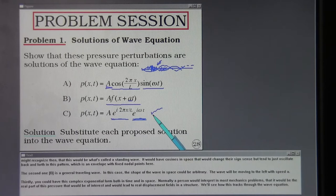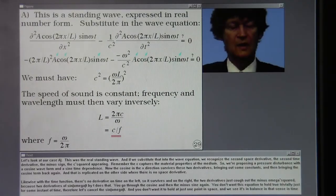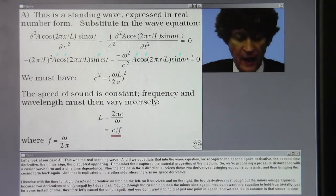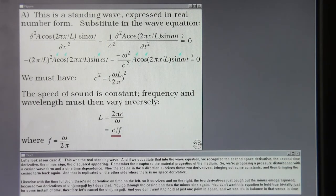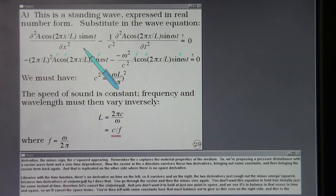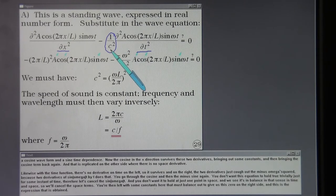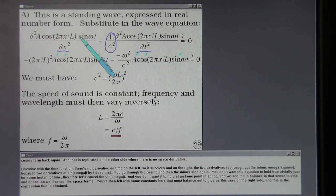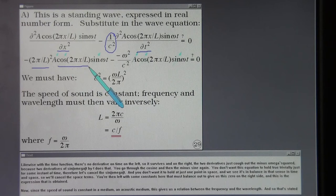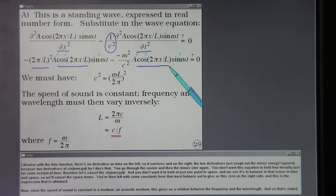Let's look at our case A. This was the real standing wave. And if we substitute that into the wave equation, we recognize the second space derivative, the second time derivative, the minus sign, the c squared appearing. Remember the c captures the material properties of the medium. So we're proposing a pressure disturbance with a cosine wave form and a sine time dependence. Now the cosine in the x direction survives these two derivatives bringing out some constants and then bringing the cosine term back again.